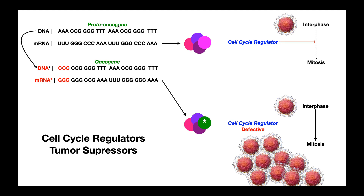Proto-oncogene: fine. Oncogene: bad. When we talk about proto-oncogenes and oncogenes, we're really only talking about these proteins functioning as cell cycle regulators. Tumor suppressor genes and tumor suppressor proteins are very similar in how they become mutated and what effects they have, but we don't use the terms proto-oncogene and oncogene with respect to tumor suppressors — those terms are exclusive to cell cycle regulators. We also need to talk about tumor suppressor genes and their proteins.